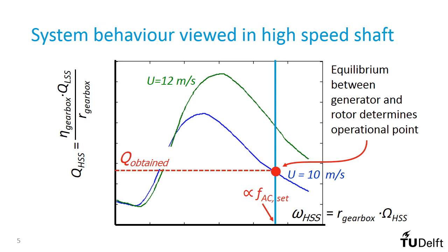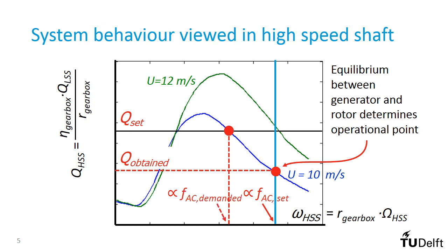For different wind speeds, it would intersect at different heights with the relevant rotor curve. However, with the back-to-back converter, the generator can also be controlled differently. It is also possible to set the torque in the generator and adjust the electrical frequency according to the demand. In this case, the operational point is found at the intersection with the horizontal line, and the demanded electrical frequency follows from the resulting rotational speed. This analysis shows that it is not the wind or the rotor aerodynamics that determine the speed of the rotor. They do play a crucial role through the CQ-lambda curve, but it is the control of the generator that is decisive.